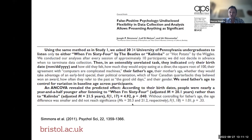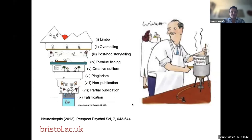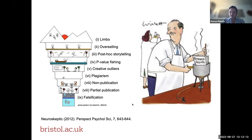Without transparency, we can never be certain which version of the account we're actually reading for any given study — a full account of everything that was done, or a redacted version edited to create a more compelling narrative. If there is transparency in the research process, we can check whether everything reported in the final output fairly reflects the research process. Without that transparency, all of these problematic behaviours documented over the last 10 to 20 years can continue to propagate through the literature without us being able to identify when they are happening.